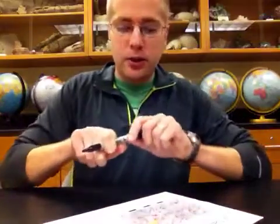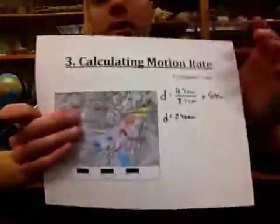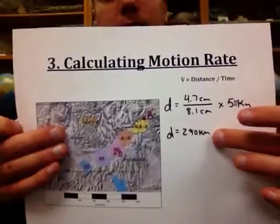When we work with plate tectonic motion, we're often working with things that are centimeters per year. The average plate motion is between about 1 to 15, maybe 20 centimeters per year, averaging about 7 to 8 centimeters per year. So instead of kilometers for our distance, what we're going to want this in is centimeters.